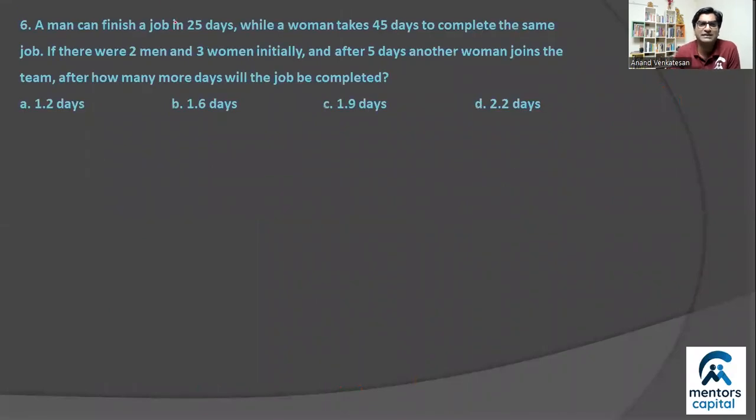Next question, question number 6. Man does it in 25 days, woman does it in 45 days. So let the work, again start with that assumption of work. Here remember 25 is 5 into 5 and 45 is 5 into 9. So one 5 is common in both. So in work we put that 5, but from the first person, the man, you have an extra 5, and for the woman you need an extra 9. So let the work be 25 into 9, that's 225 units.